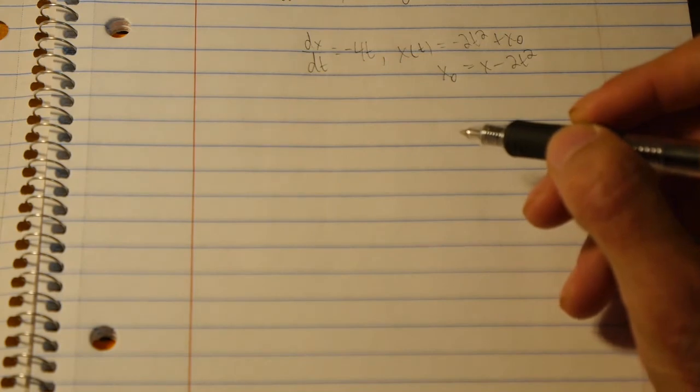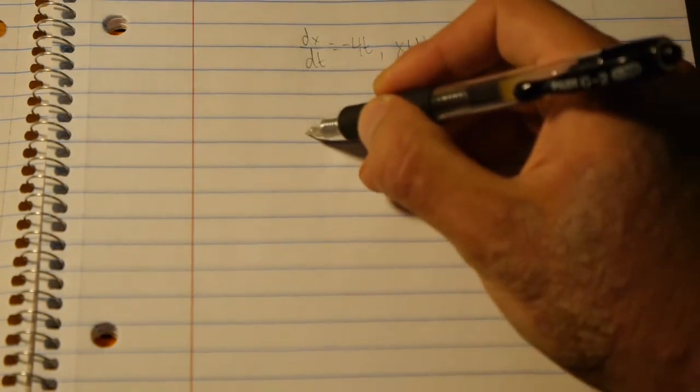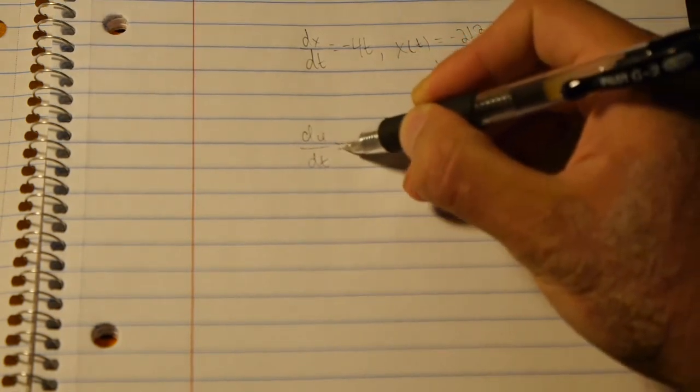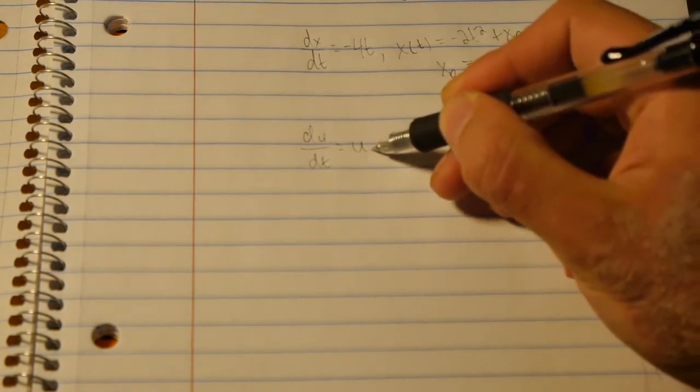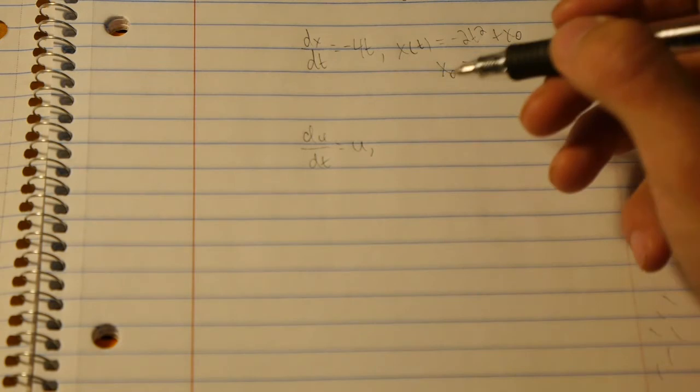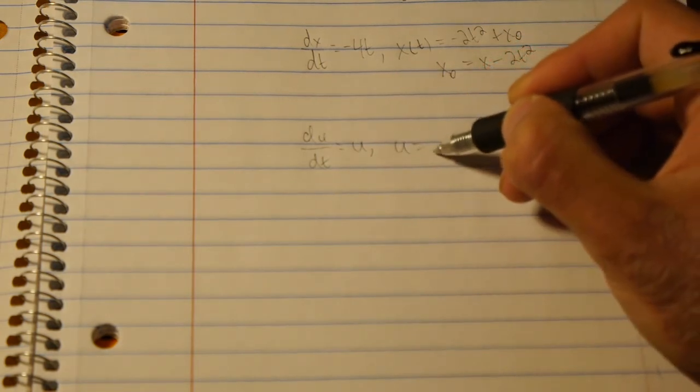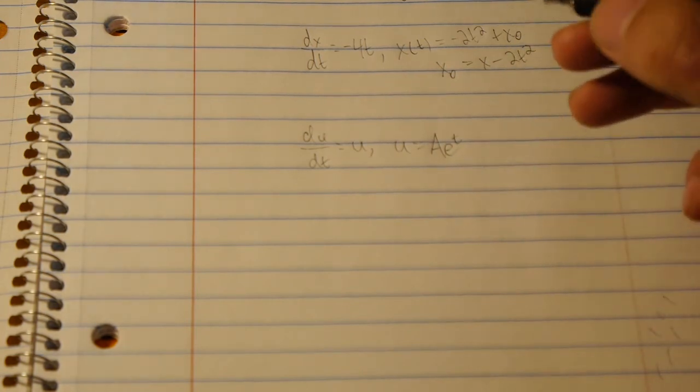So now we find du/dt and we solve that ODE. So we have from before du/dt is equal to u in the equation we had above. And this is pretty easy. Just as any first order differential equation, we have u equals A e to the t.